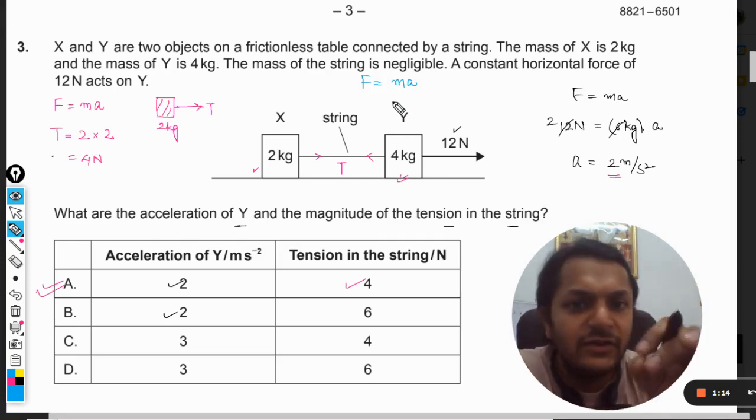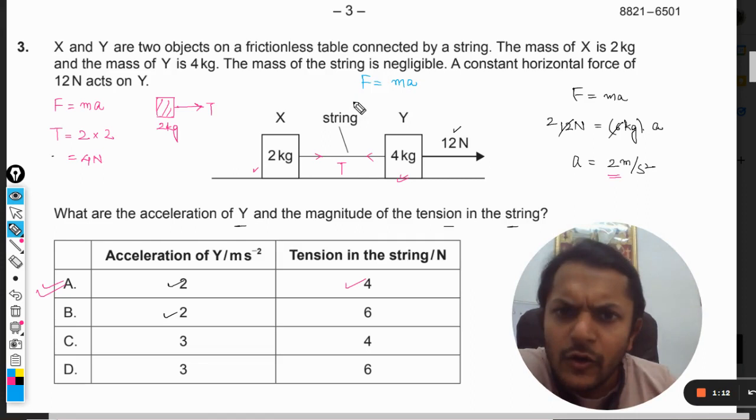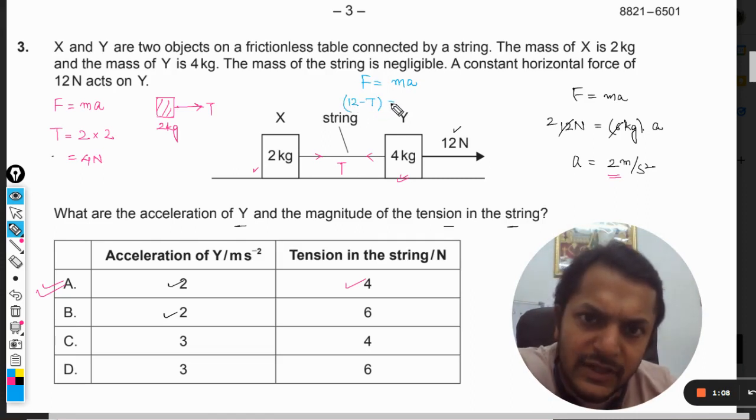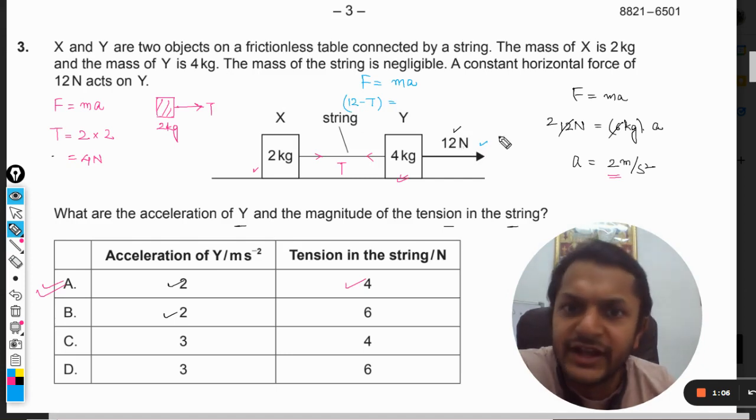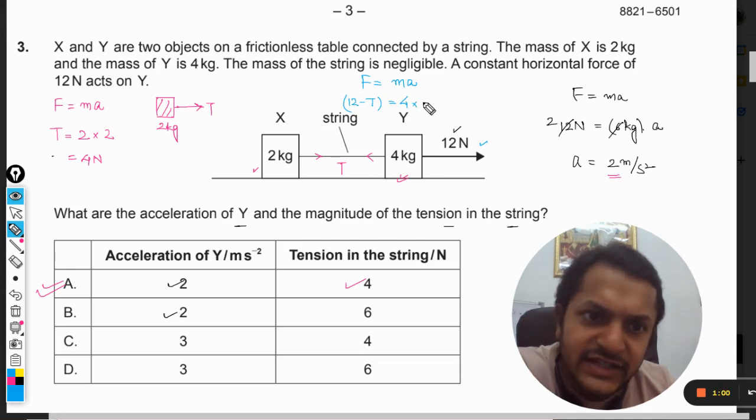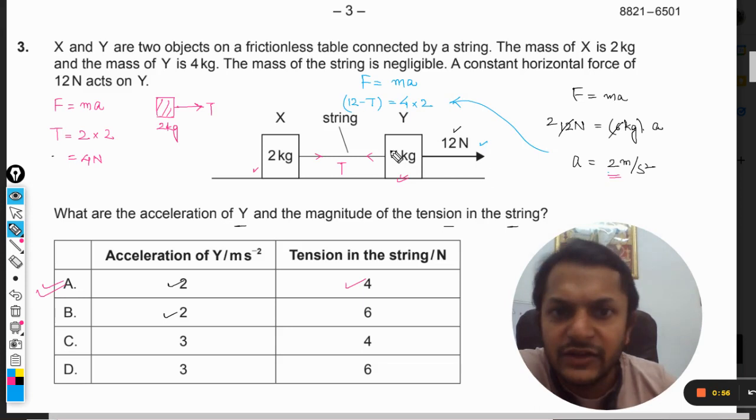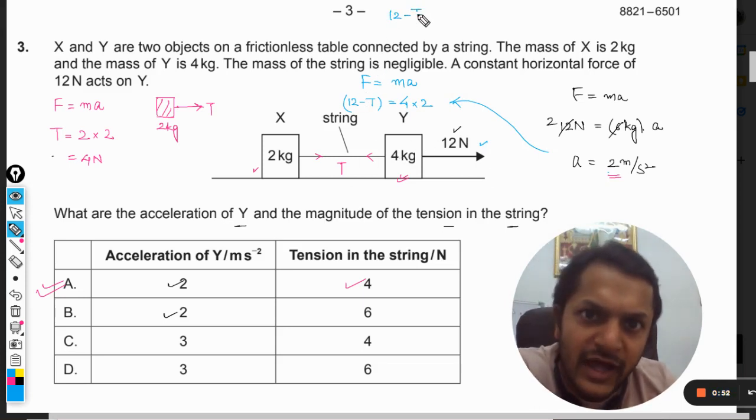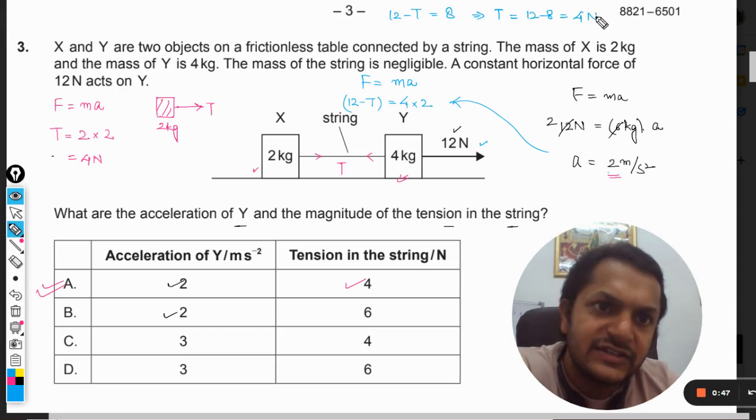Won't it be 12 newton minus T? Because 12 is acting in forward direction and T is acting in backward direction. It will be 12 minus T. Mass will be 4 kg, and acceleration will be 2. So I am using this value here again. So on solving this, what am I getting? 12 minus T is equal to 8, so T is equal to 12 minus 8, which is 4 newton.